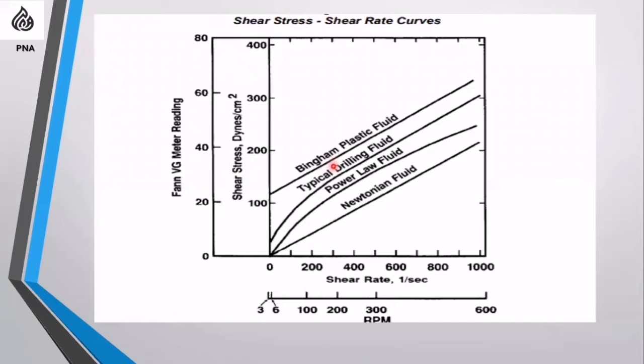Typical drilling fluids behave similarly to both Bingham plastic and power law models — they fall in between. So we use both for our calculations. Shear rates used are 3, 6, 100, 200, 300, and 600 RPM readings.